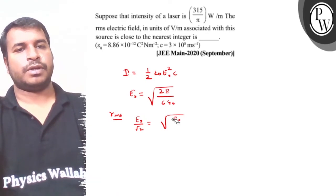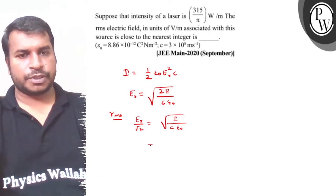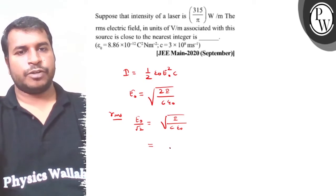I upon c epsilon naught. Is the value given? So E naught value is equal to...